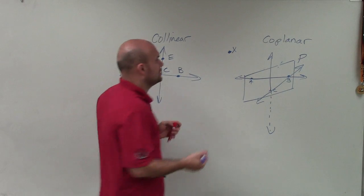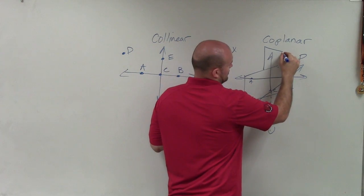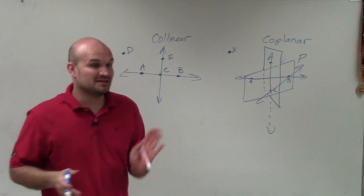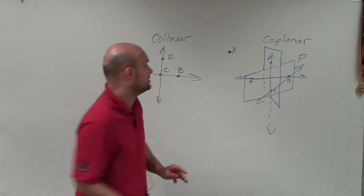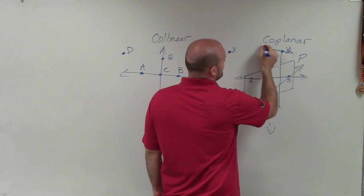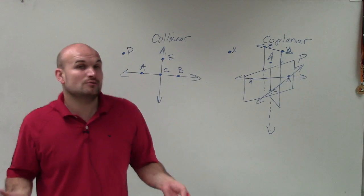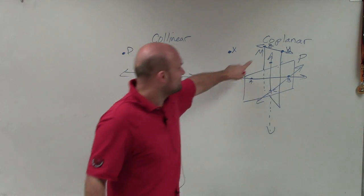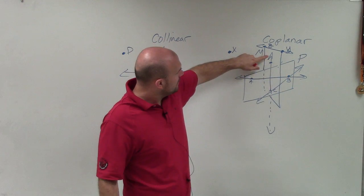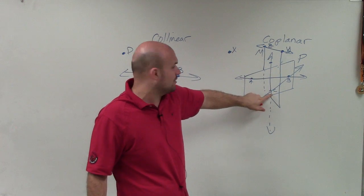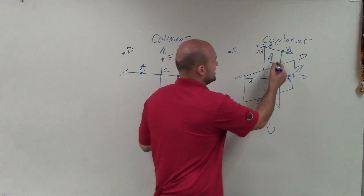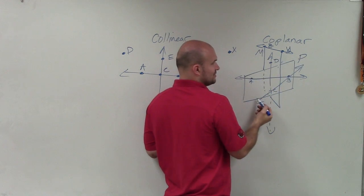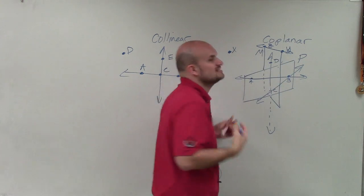You could also have planes that are perpendicular to each other. Let's say I had another point Y, or even a line Z, Y. Since Z, Y is on a plane — which we'll call plane M — and plane M is perpendicular to plane P, the only point that they have in common is C. So therefore, the line through C — line C, D — is on plane M but not on plane P. So therefore, this line is not coplanar with the lines on plane P. Or you could say Z, Y is not coplanar because it doesn't lie on the same plane.